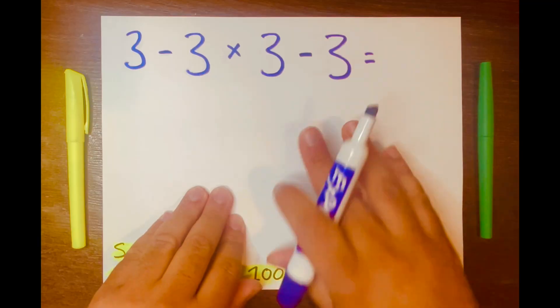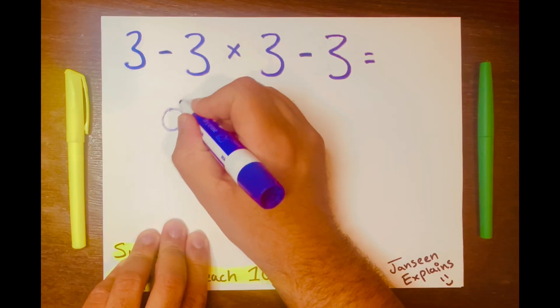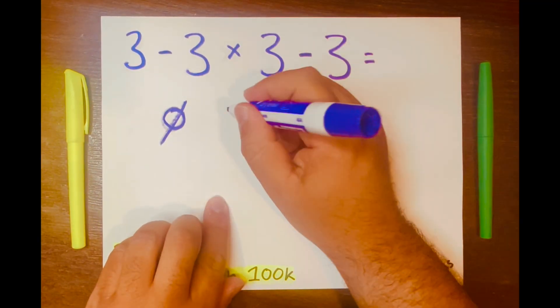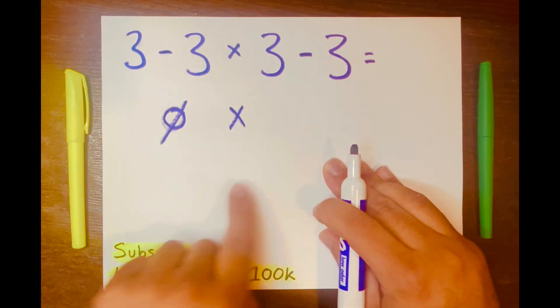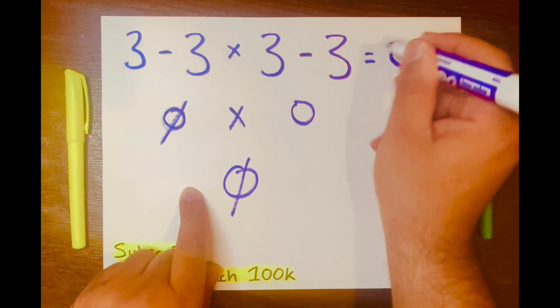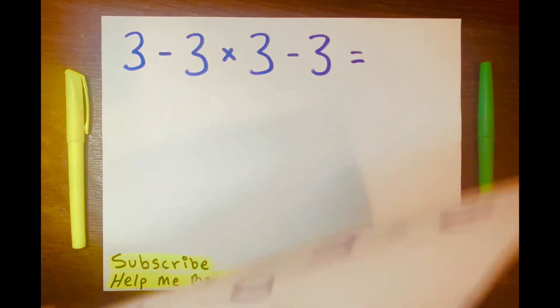They'll start solving it like this. They'll go 3 minus 3 is 0, 0 times 3 minus 3 is 0. So the answer is 0, and that is so wrong. That is not the answer.